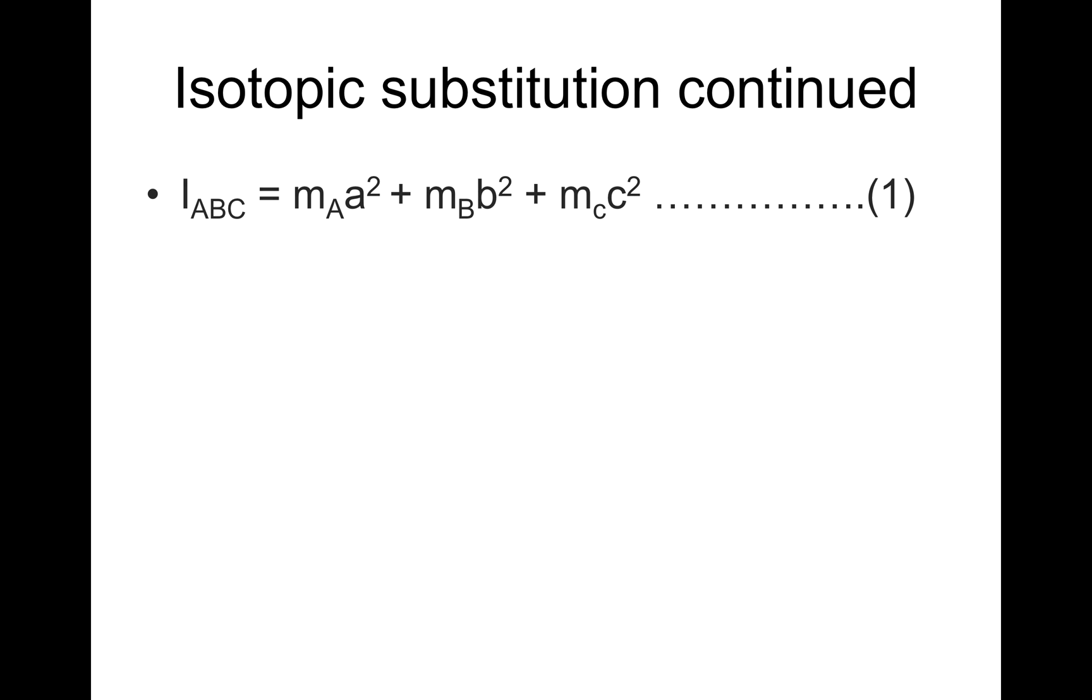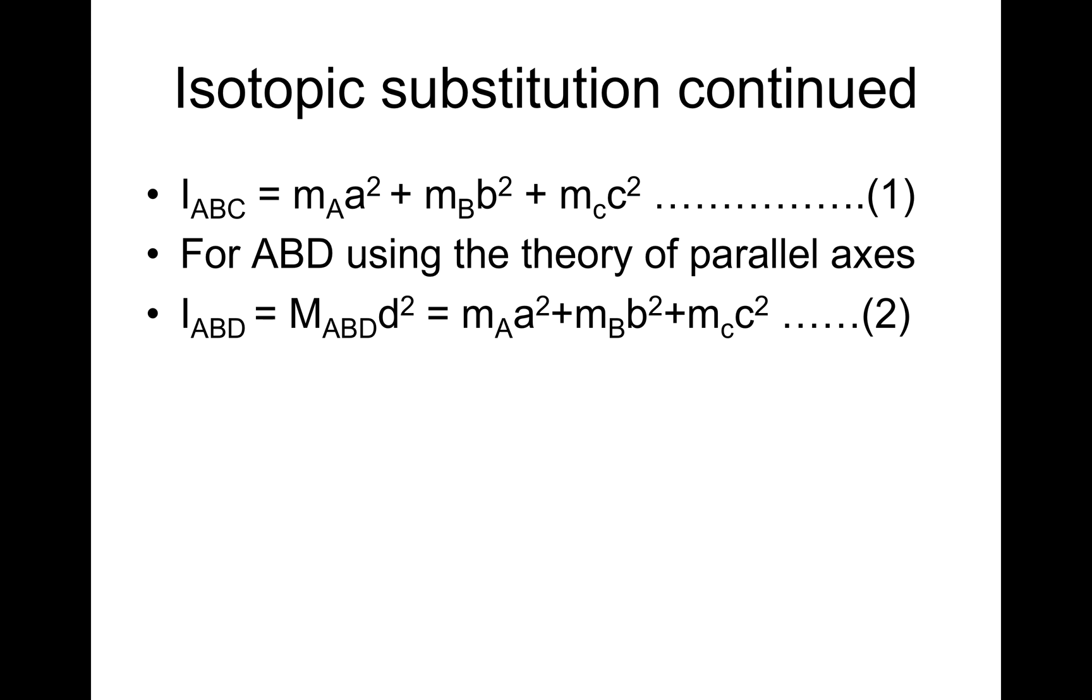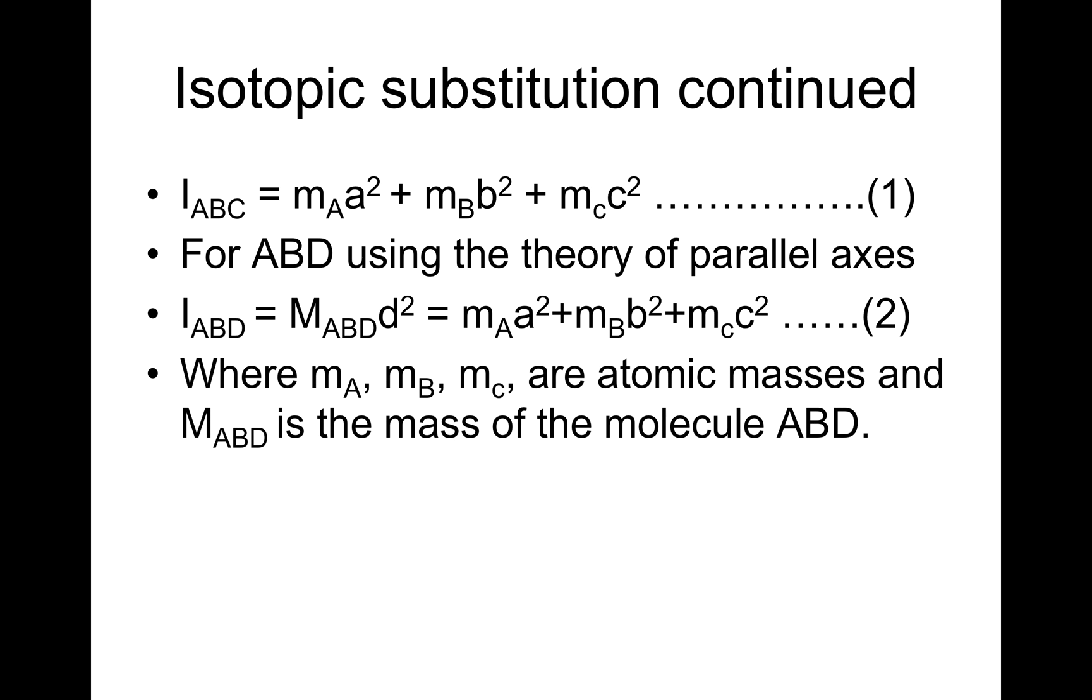Now, for molecule ABC, we can write I_ABC is equal to m_A*a² + m_B*b² + m_C*c². Where m_A, m_B, and m_C are the atomic masses. And M_ABD is the mass of the molecule ABD. That, therefore, means M_ABD is equal to m_A + m_B + m_D.